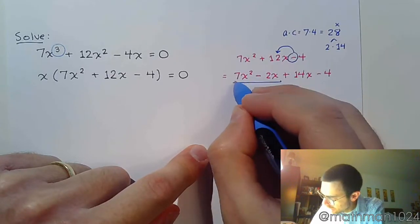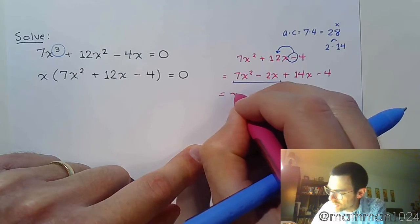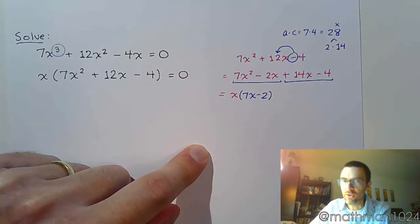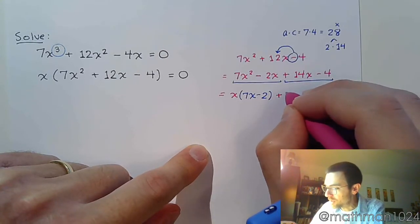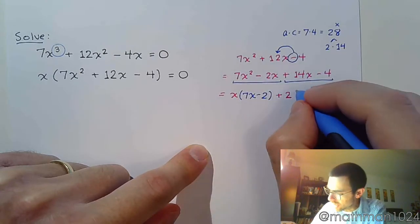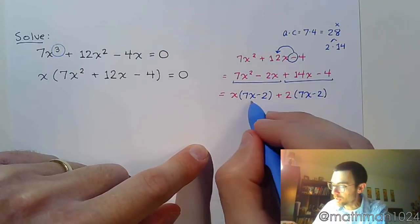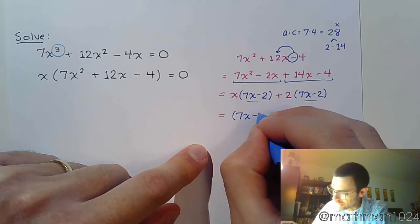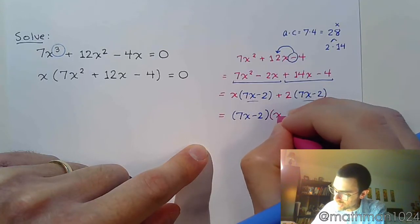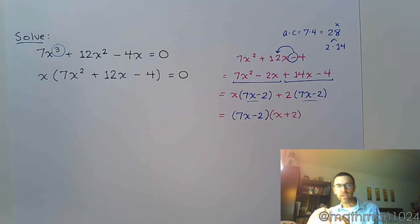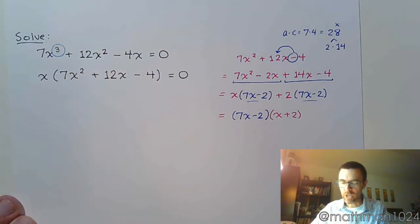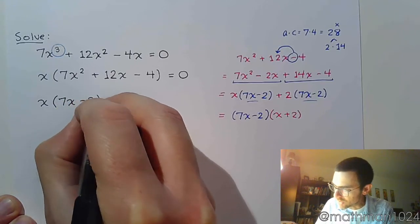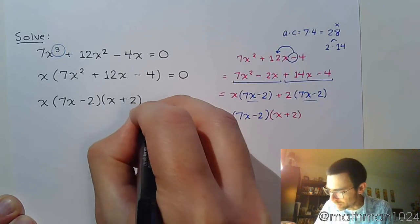In the first group, we see a common factor of x. Factor that out and we are left with 7x minus 2. The second group, which begins with a plus, has a common factor of 2. Factor that out and again we have 7x minus 2 — exactly what we're supposed to have. These are the exact same factor, so bring that up front.